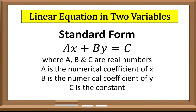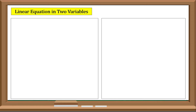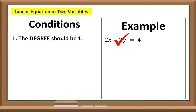In a linear equation in two variables, there are conditions that we should follow. First, the degree should be one. This is an example of a linear equation, and this is not an example of a linear equation because the degree is two.